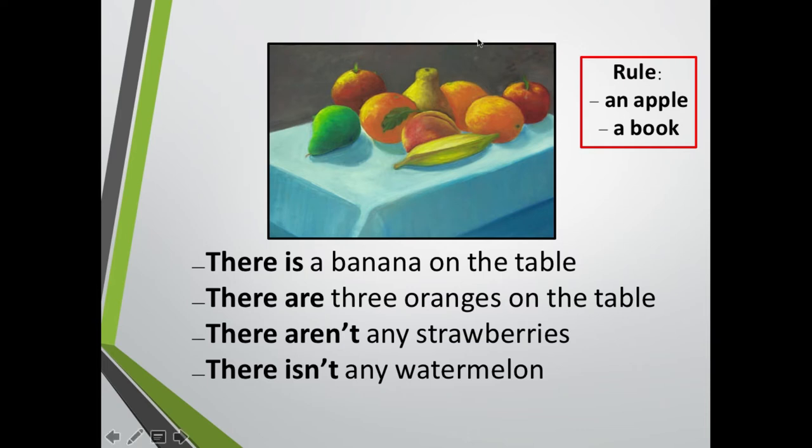For example, look at the picture. Vamos mirando la imagen. We can say, podemos decir, there is a banana on the table. Hay una banana sobre la mesa. ¿Cierto? There is. Hay. Y esta vez is y no are porque estamos hablando de una. Singular. Yes? Look at here. There are three oranges on the table. Hay de nuevo.